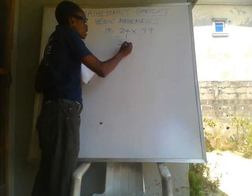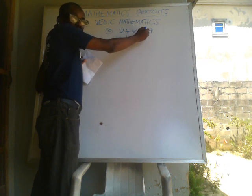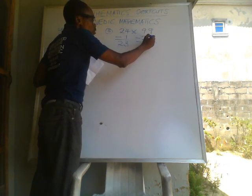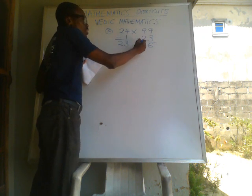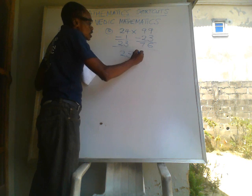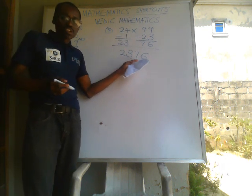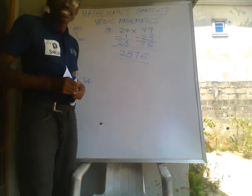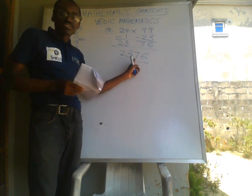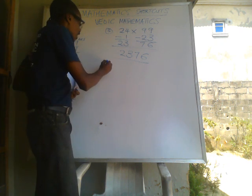24 minus 1 gives 23. We then subtract 23 from 99: 9 minus 3 is 6, and 9 minus 2 is 7. Combining all the digits together we have 2376. So 24 times 99 equals 2376. You can punch this into your calculator to confirm.